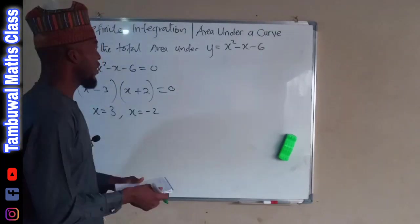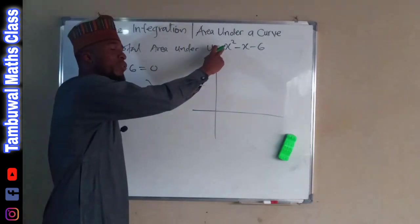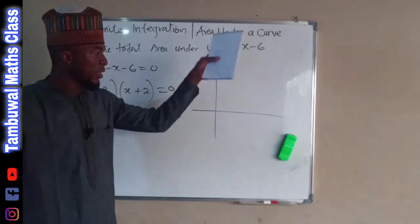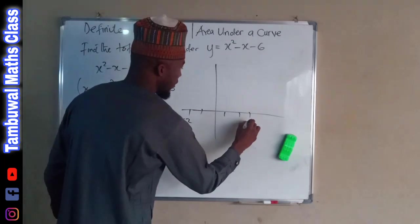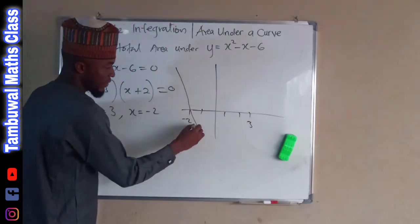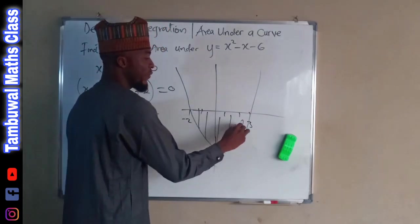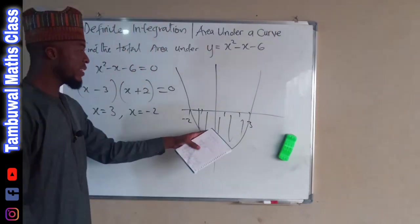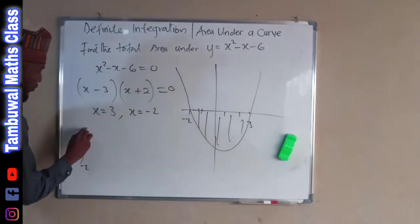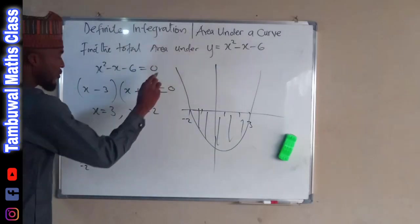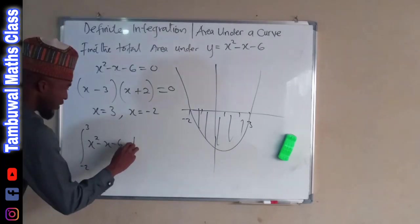Now let us make a rough sketch. Since the leading coefficient is positive, our parabola is going to open upward, crossing at negative 2 and 3. The area below the x-axis between these intercepts is what we are looking for. To find this area, we are going to take the integral from negative 2 to positive 3 of the function x squared minus x minus 6 with respect to x.